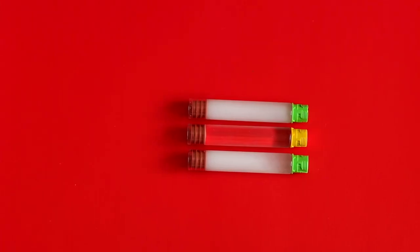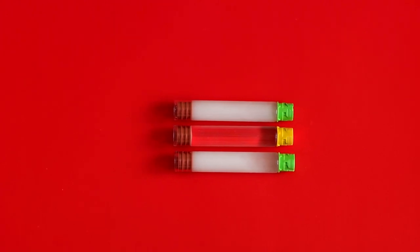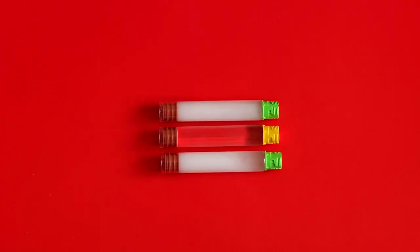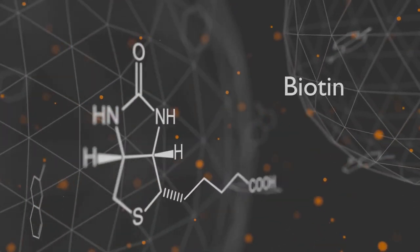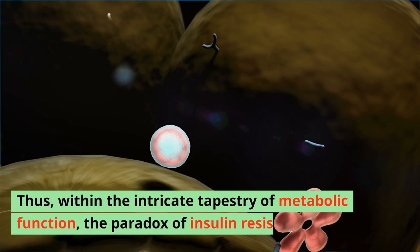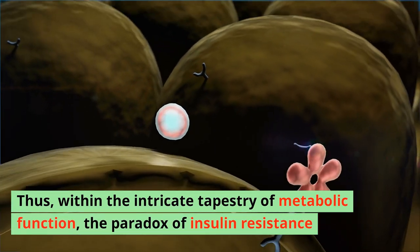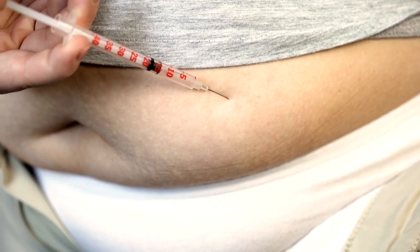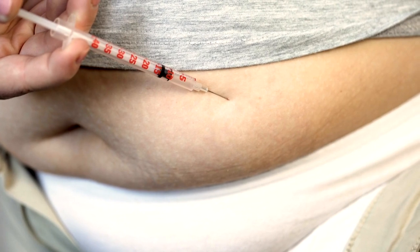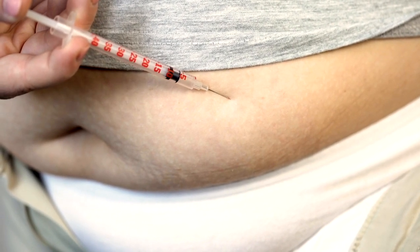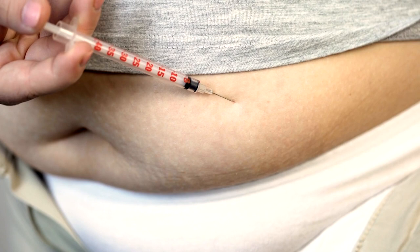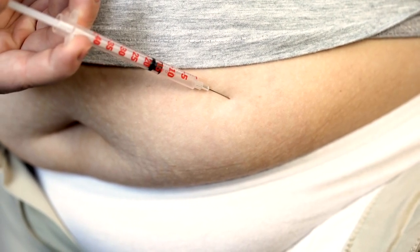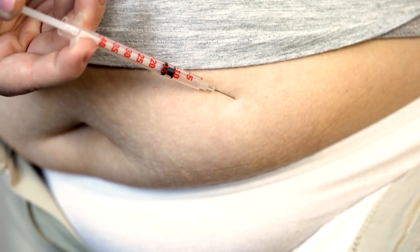The once clear pathway to equilibrium becomes obscured by the veils of resistance, leaving the body adrift in a sea of dysregulation. As insulin's commands fall upon deaf ears, the harmony of gluconeogenesis falters, perpetuating the discord of elevated blood sugar levels. Thus, within the intricate tapestry of metabolic function, the paradox of insulin resistance serves as a poignant reminder of the intricate interplay between hormonal signaling and cellular response. In the battle against metabolic imbalance, understanding the nuances of insulin resistance becomes paramount, offering a beacon of hope amidst the shadows of physiological discord.